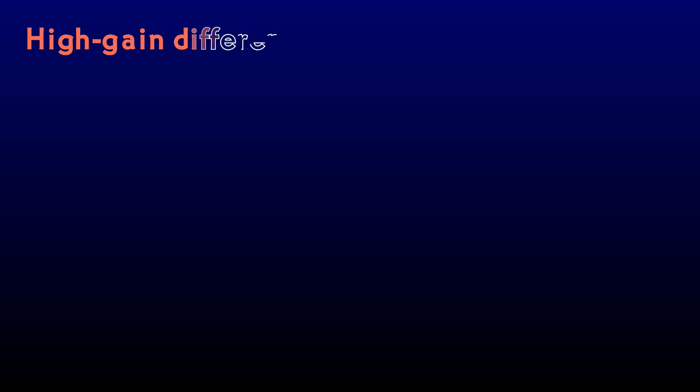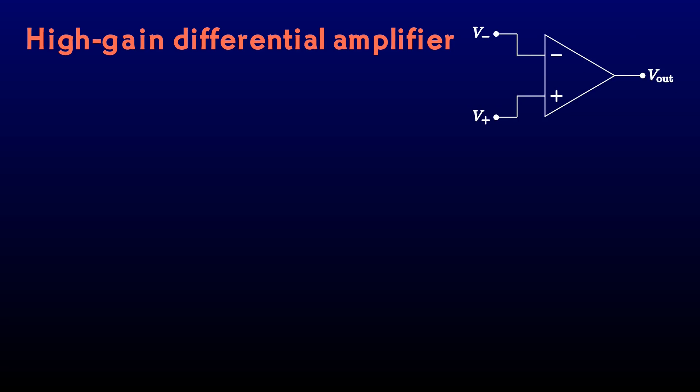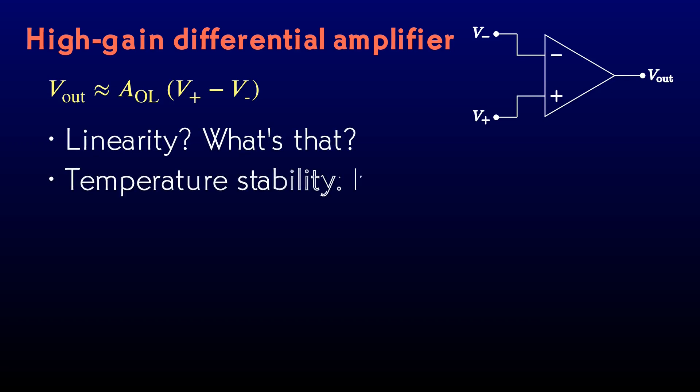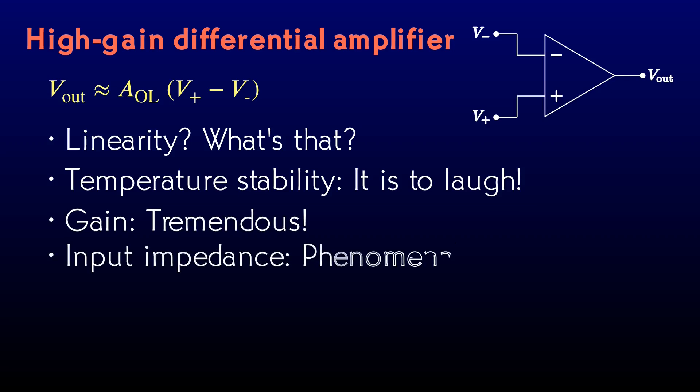We can define an op-amp as a high-gain differential amplifier. We'll see just what we mean by high gain in a moment. By differential, we mean that an op-amp has two input terminals, and its output voltage is sort of proportional to the difference between the voltages at those two terminals. But an op-amp doesn't have all the nice properties of linearity or temperature stability that we've been trying to achieve over in the series on transistors. What it does have is a tremendously high gain and a phenomenally high input impedance.